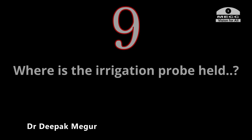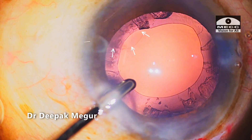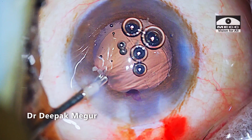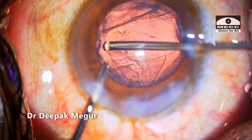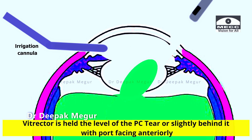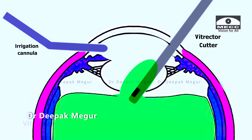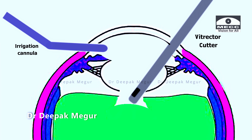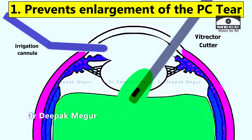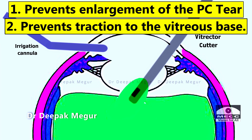Where do I hold the irrigation cannula? It should be held just adjacent to the side port incision, but nowhere near the posterior capsule tear — as far away from it as possible. The fluid must be directed towards the angle, not into the torn posterior capsule area. For the cutter, the vitrector is ideally held at the level of the posterior capsule tear or slightly below it, with its port facing anteriorly. Vitreous anterior to the tear is first cut and pulled back posteriorly before being aspirated — this reduces the chance of enlarging the tear and minimizes traction on the vitreous base. This is why the pars plana approach is preferred today.